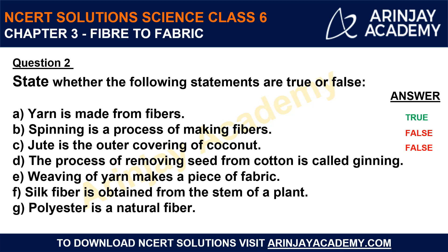Continuing question two: (E) Weaving of yarn makes a piece of fabric — True; through weaving or knitting we convert yarn into a piece of fabric. (F) Silk fiber is obtained from the stem of a plant — False; silk fiber is obtained from the saliva of the silkworm, which is an animal source, not a plant stem. Polyester is made through chemical substances, so it is a synthetic fiber.